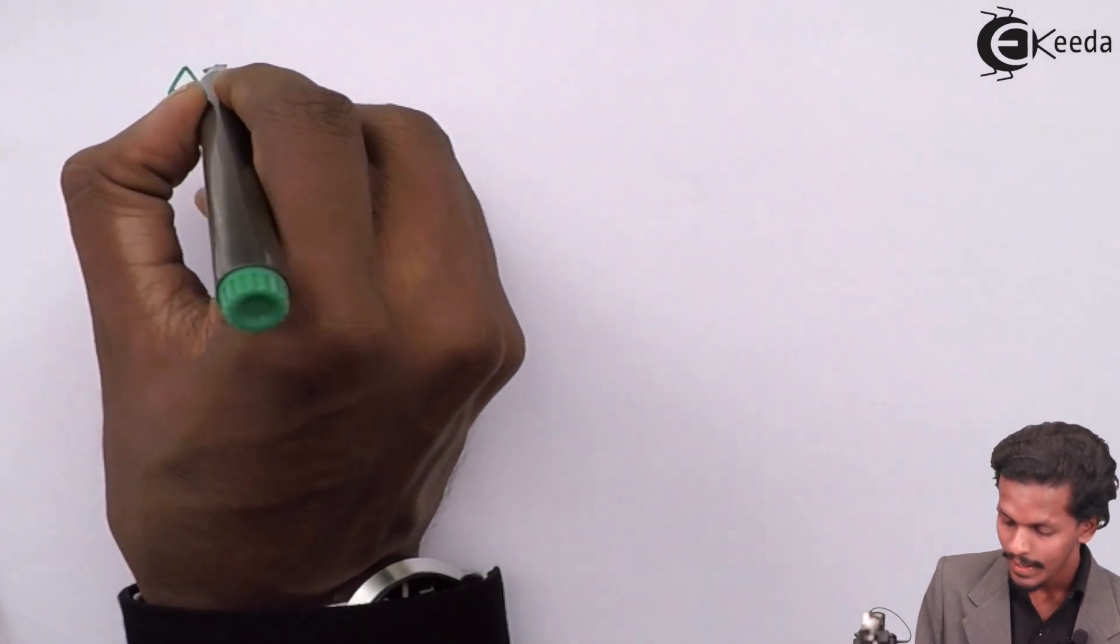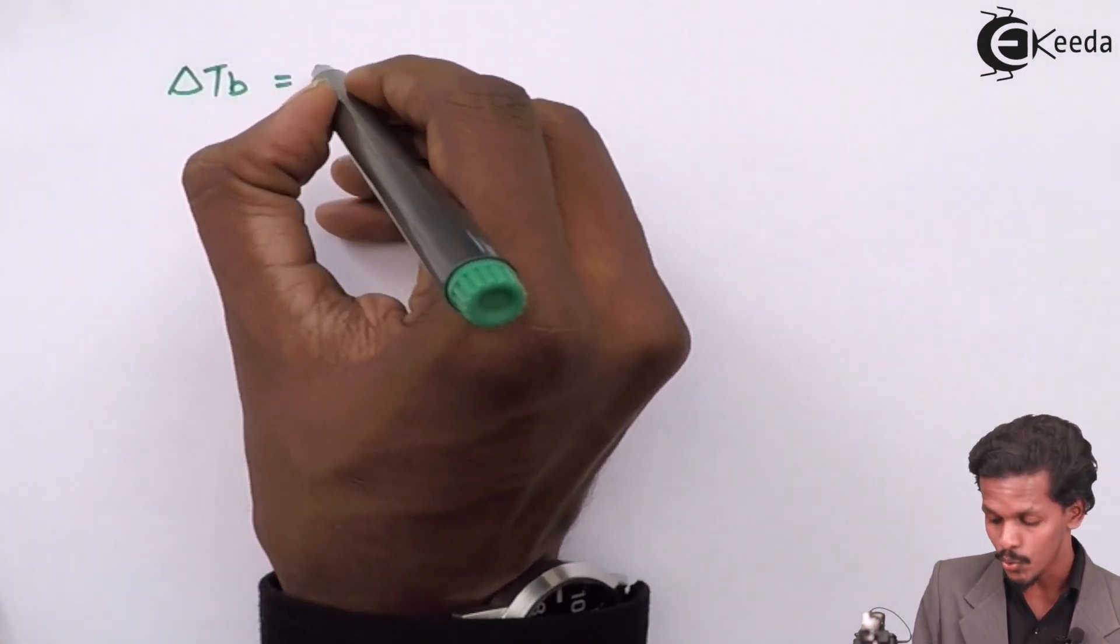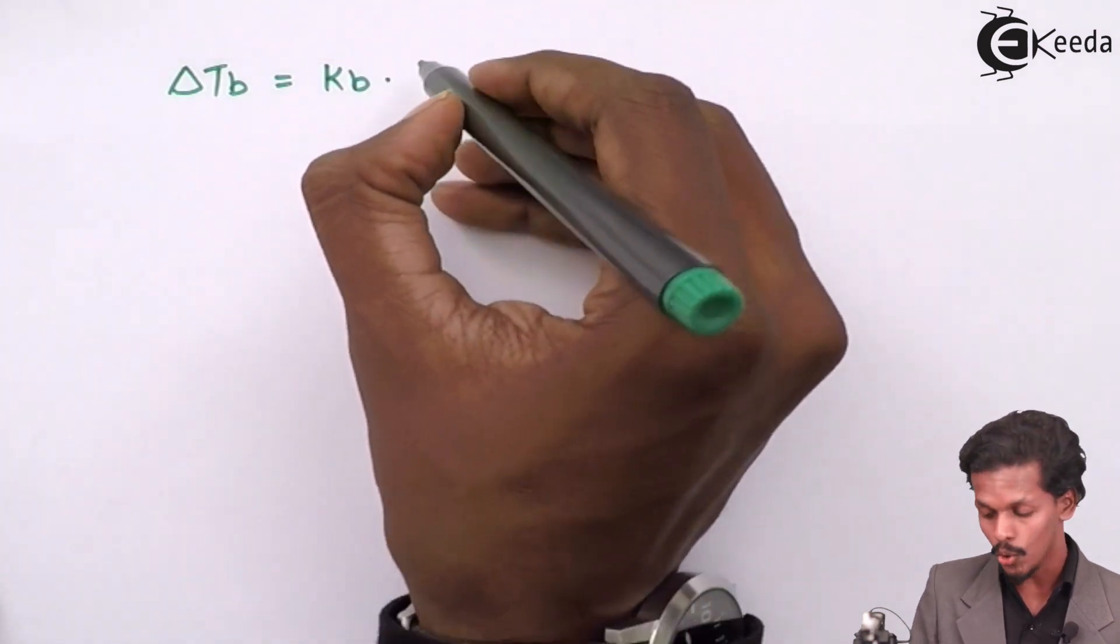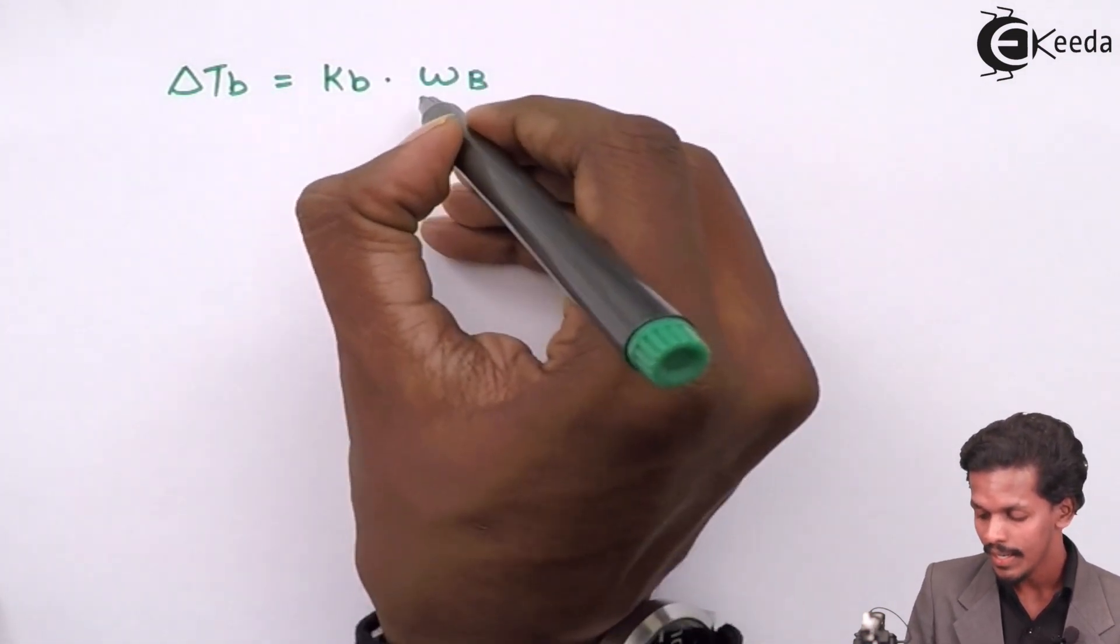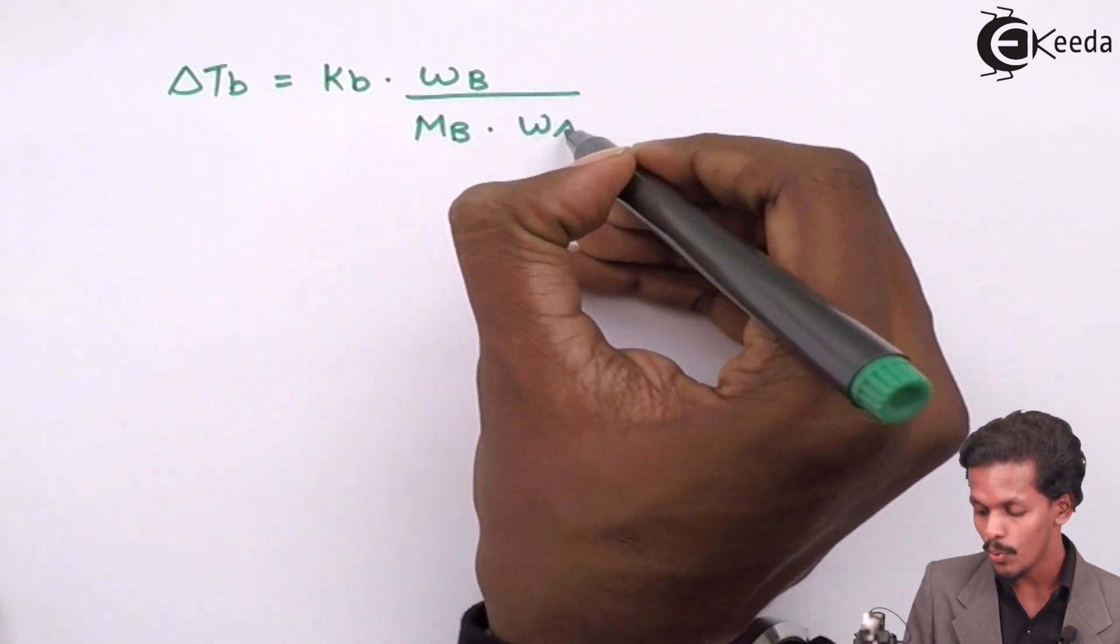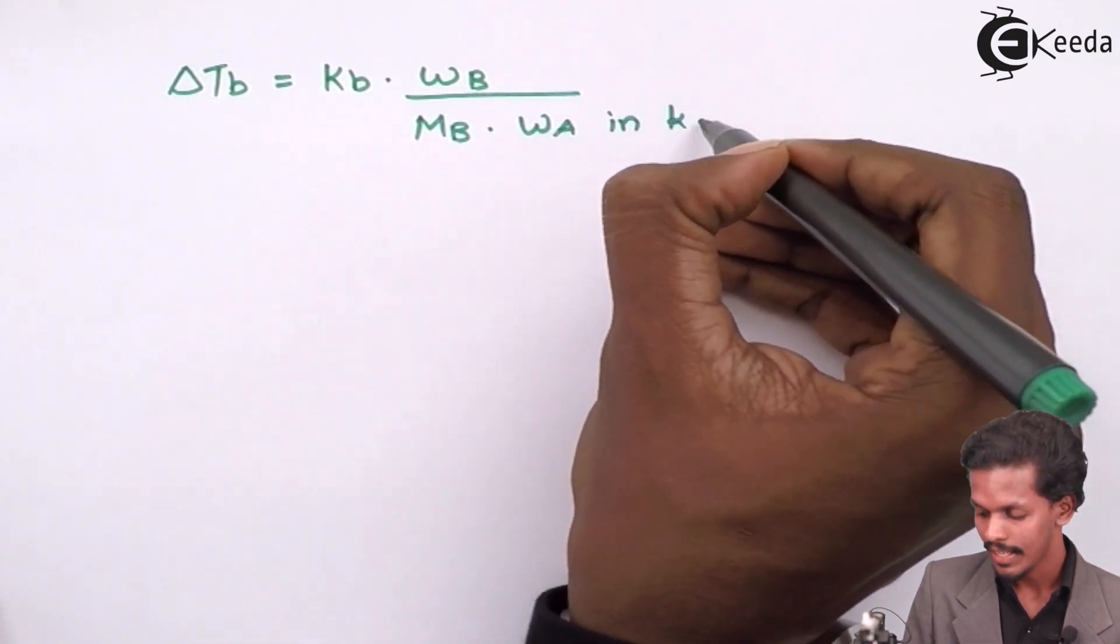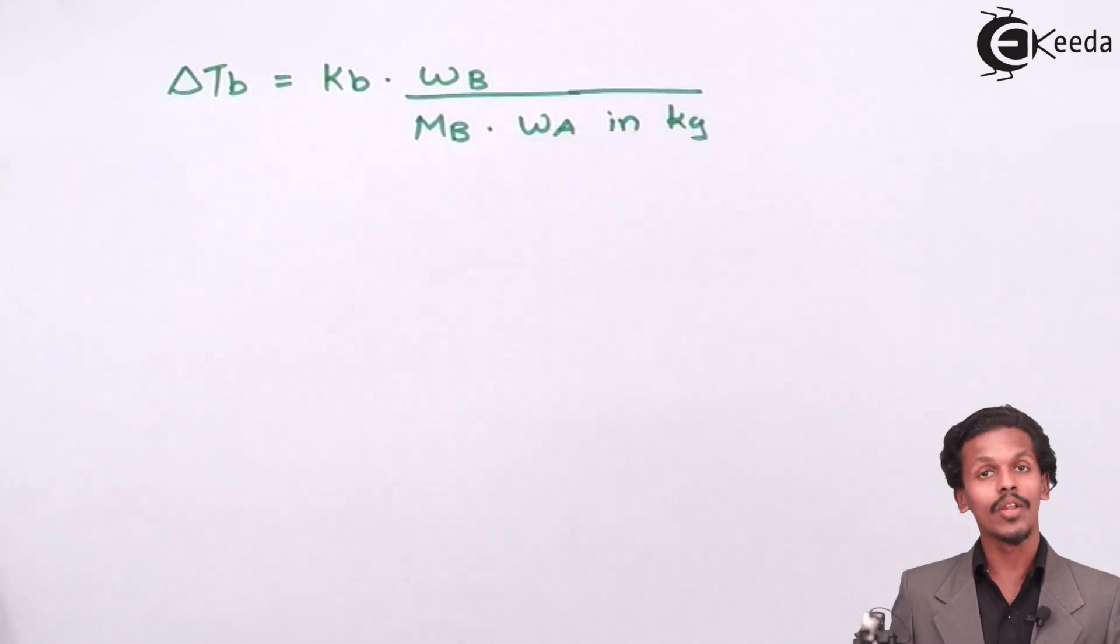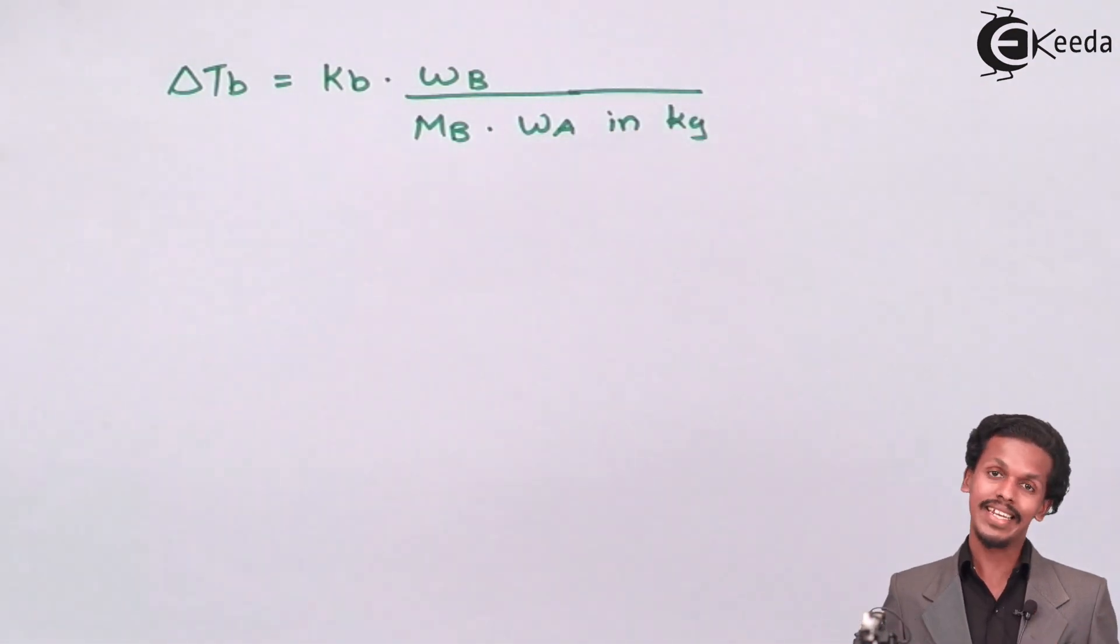We know the formula: delta Tb equals Kb into WB divided by MB into WA in kg. The value of WA should always be in kg.